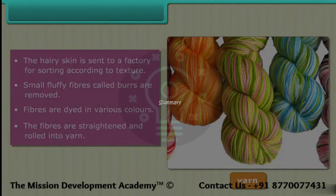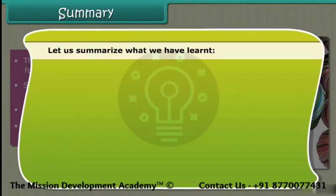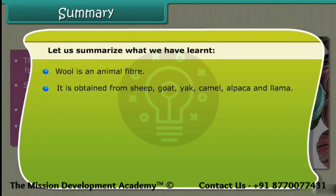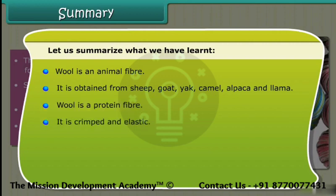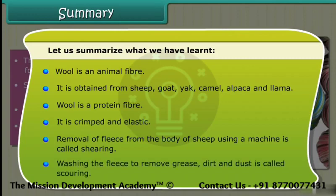Let us summarize what we have learned. Wool is an animal fiber obtained from sheep, goat, camel, alpaca, and llama. Wool is a protein fiber — it is crimped and elastic. The removal of fleece from the body of a sheep using a machine is called shearing. Washing the fleece to remove grease, dirt, and dust is called scouring.